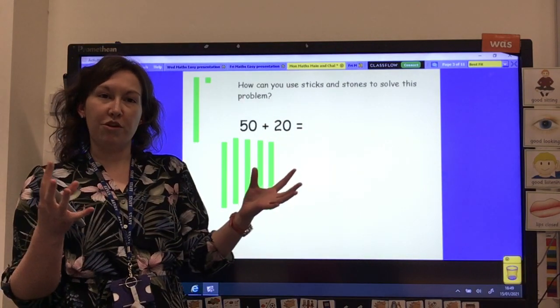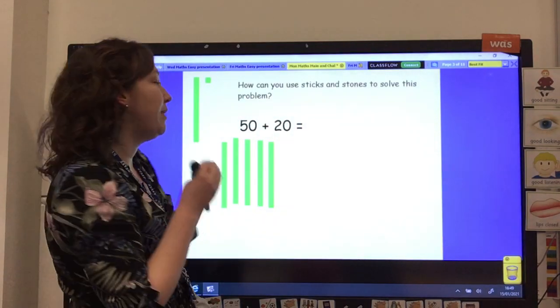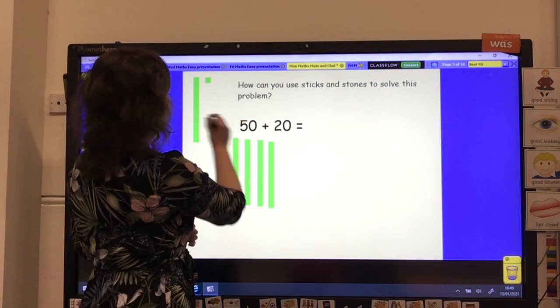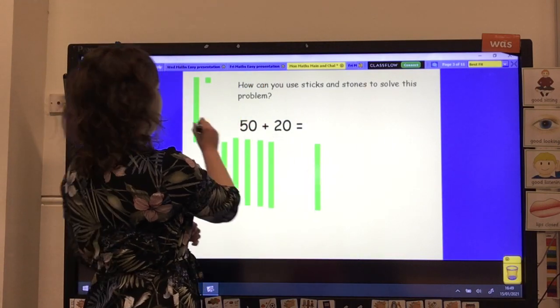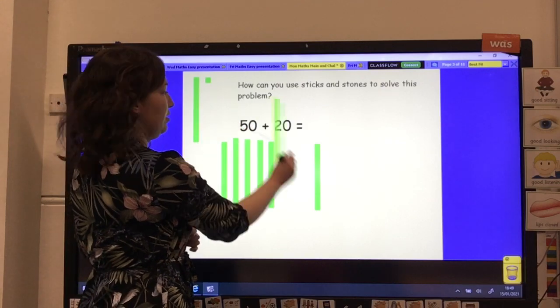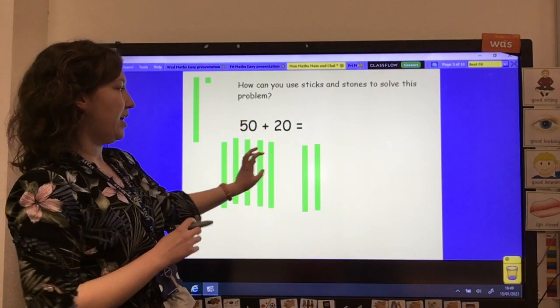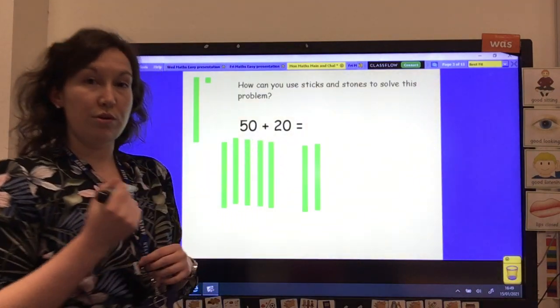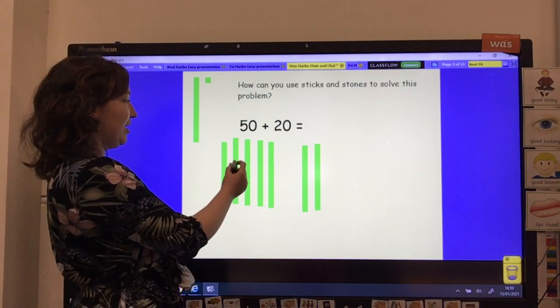And I'm adding on 20. So that means that I've got two groups I'm going to be combining. I'm going to be adding to work out the total. So I've made my 50 and now I need to make 20 more. So I've got 50 here and 20. Now I need to work out what they add up to all together, because remember we're adding.